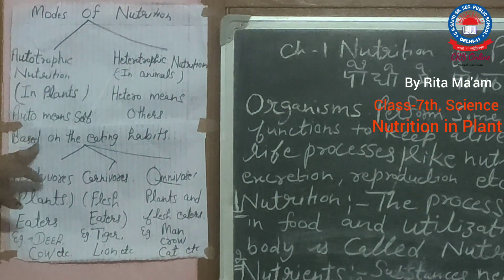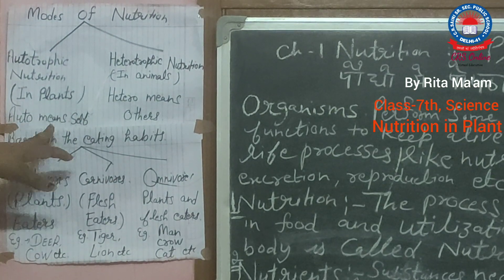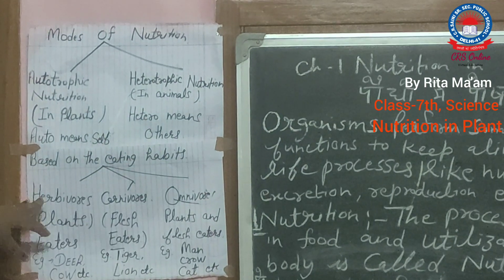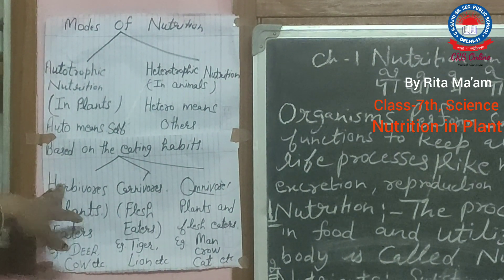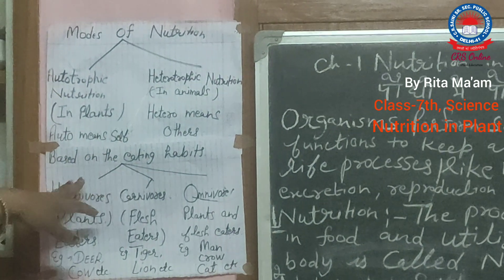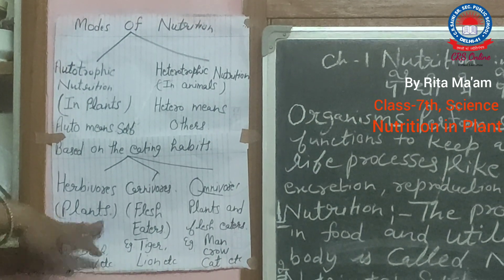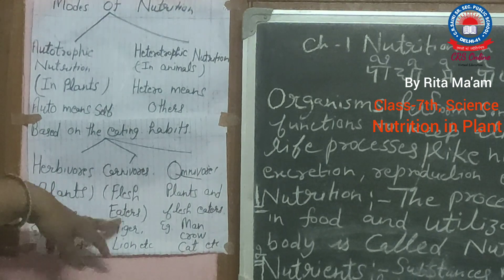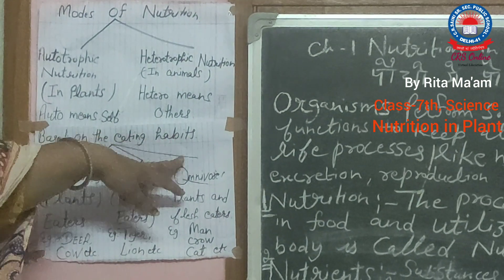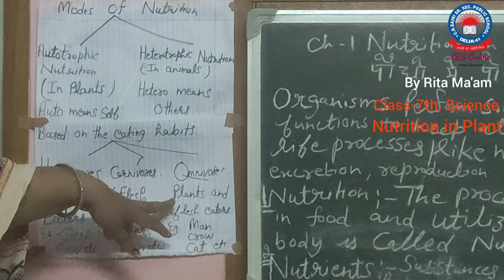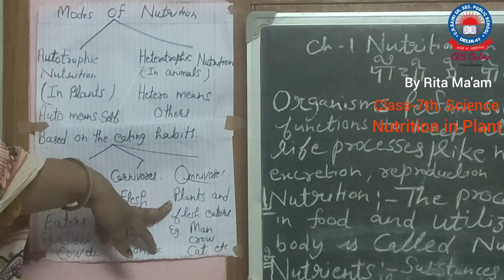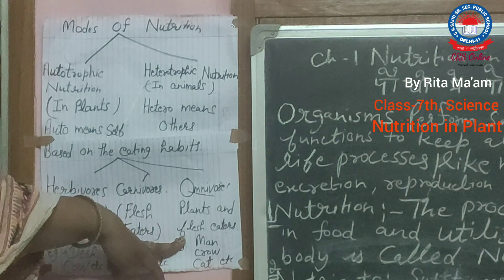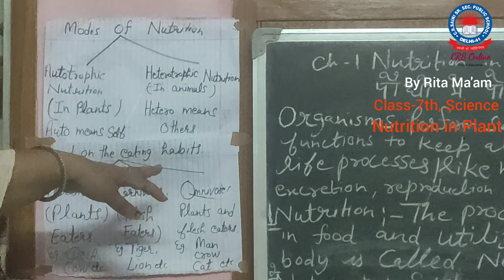Based on eating habits, animals which eat only plants are called herbivorous animals, like deer and cow. Carnivorous animals eat the flesh of other animals — these are called flesh eaters, like tiger and lion. Omnivorous animals eat both plants and animals, like humans, who eat plant products but many also eat the flesh of other animals.